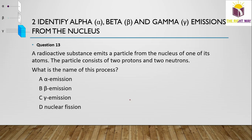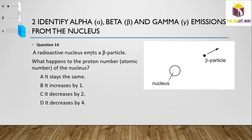Question 13: A radioactive substance emits a particle from the nucleus consisting of two protons and two neutrons. This is alpha emission, because an alpha particle contains exactly two protons and two neutrons.